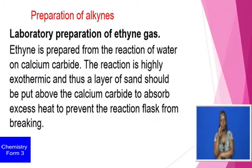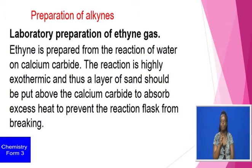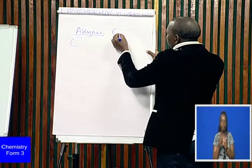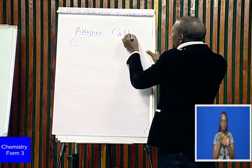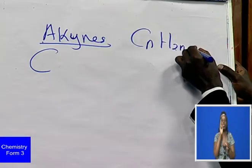Let's start by looking at the preparation of ethylene and alkynes. Alkynes belong to a group of homologous series with the general formula CnH2n minus 2.